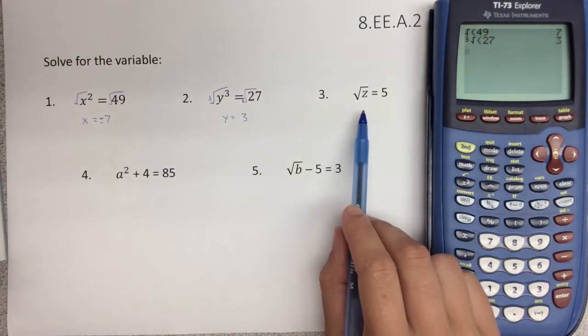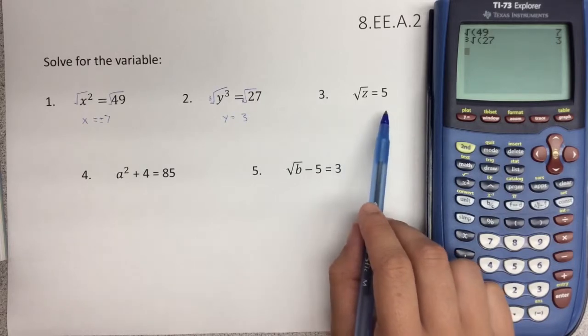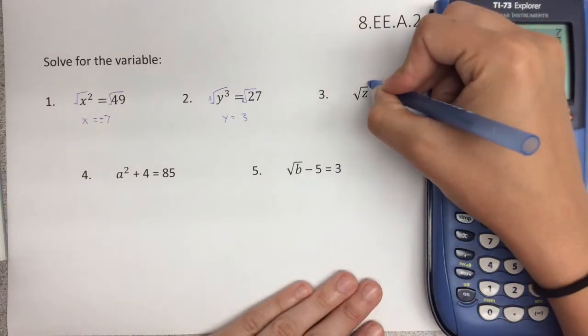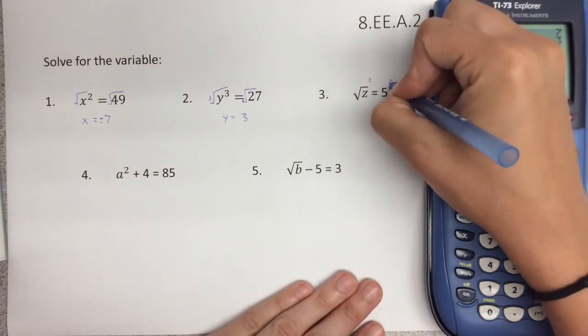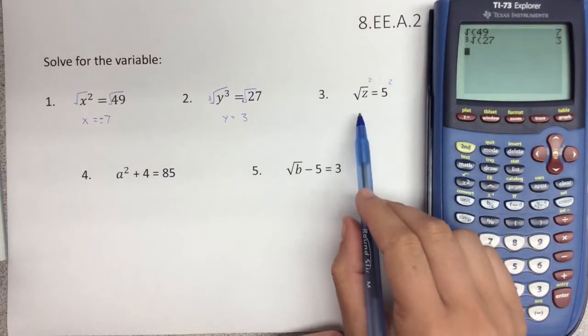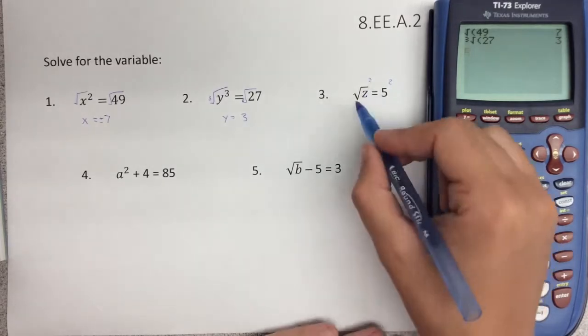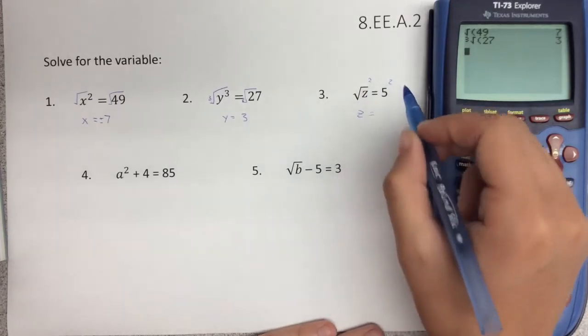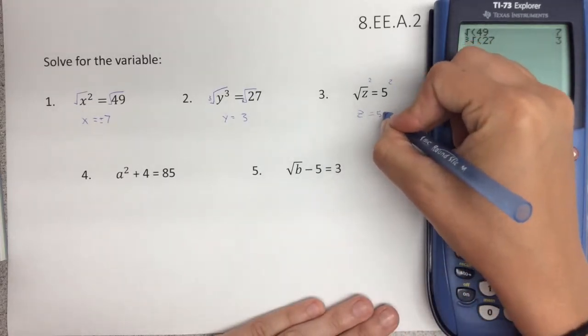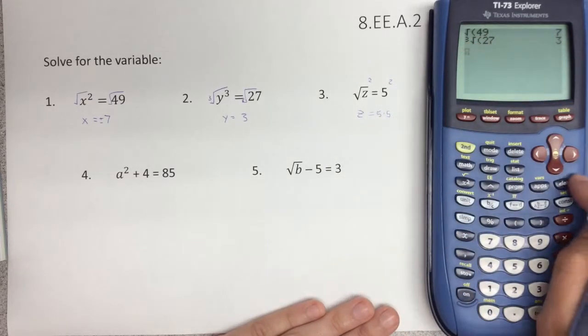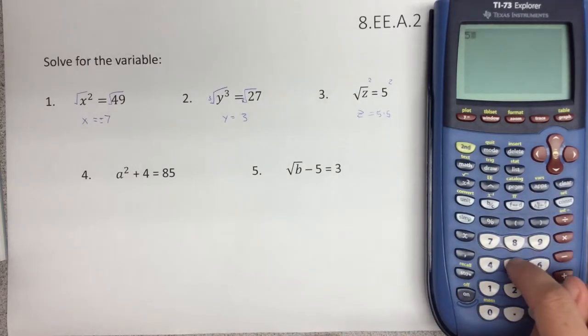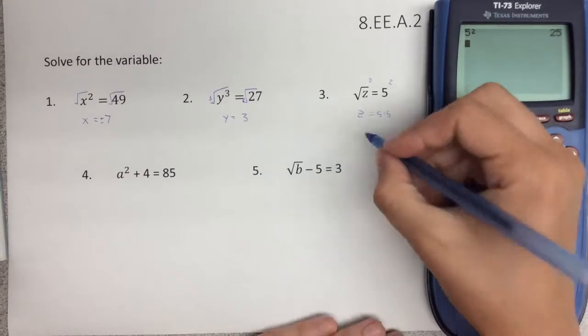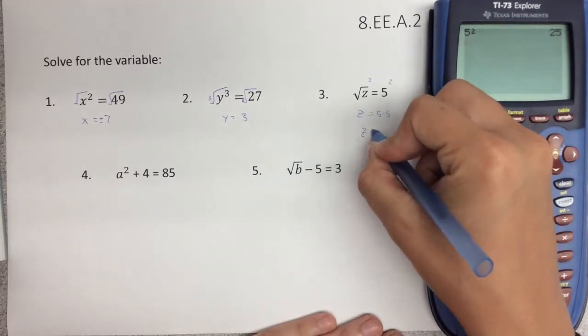For number three, we have the square root of z equals 5. The opposite of a square root is a square. So we are going to square both sides. The square on the left-hand side will get rid of the square root. So this is just going to be z equals. And then 5 squared is the same thing as saying 5 times 5. Or in the calculator, if you're wanting to type this in, you can press 5 and then the x squared button right here, enter, which is 25. So z equals 25.